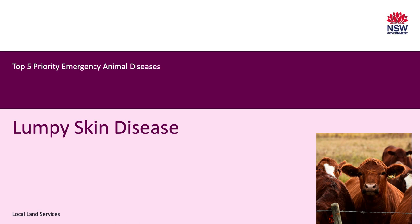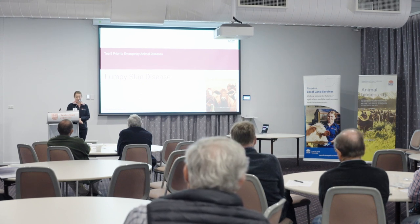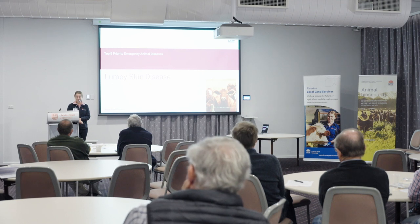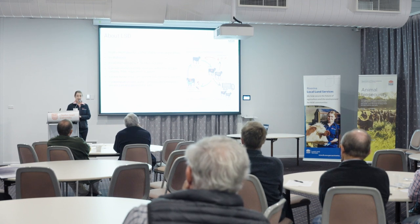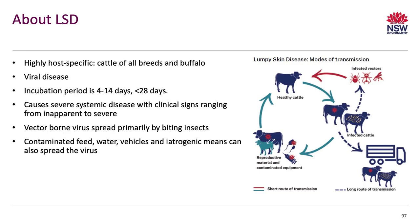Lumpy skin disease is another disease we've heard a lot about over the last 12 months. Unlike foot and mouth disease, lumpy skin disease only affects cattle and buffalo. It's also a viral disease with an incubation period of around 4 to 14 days, usually less than 28 days. It causes anything from severe systemic disease with marked clinical signs to inapparent disease — it's a horrendous disease to see, and the effects it has on animals make them incredibly unwell. It's a vector-borne virus spread primarily by biting insects, and contaminated feed, water, vehicles, and iatrogenic means can also spread the virus.